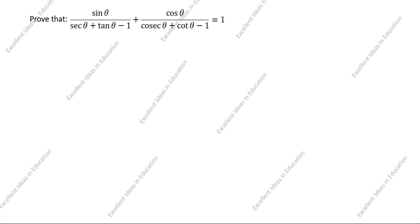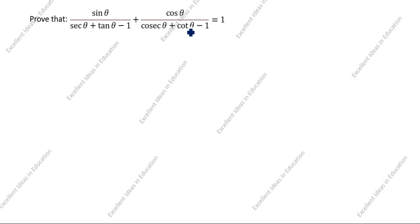Hi friends, welcome to my channel Excellent Ideas in Education. Today we are going to solve this trigonometry identity problem. This is a very important problem. Prove that sinθ divided by (secθ + tanθ − 1) plus cosθ divided by (cosecθ + cotθ − 1) equals 1.